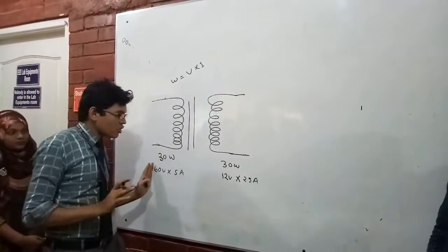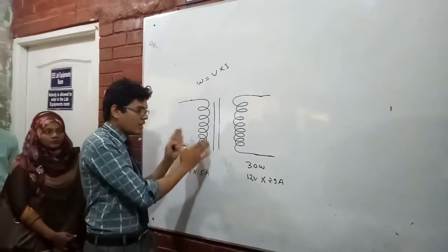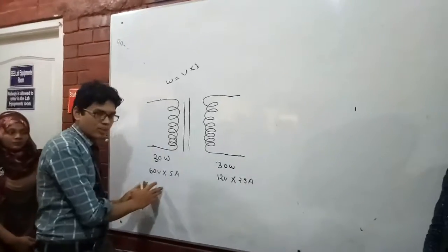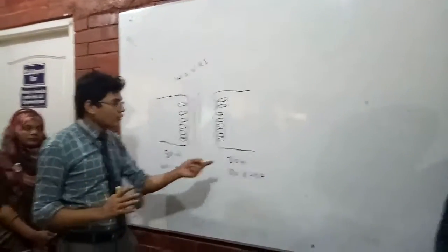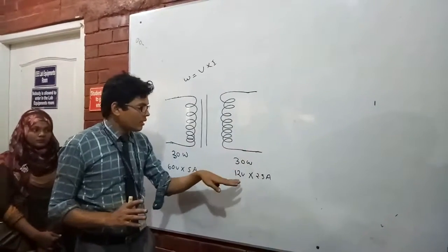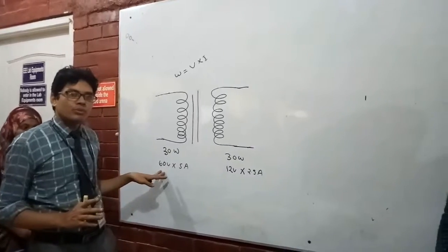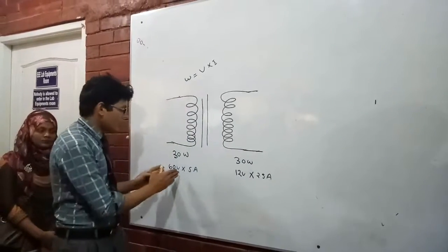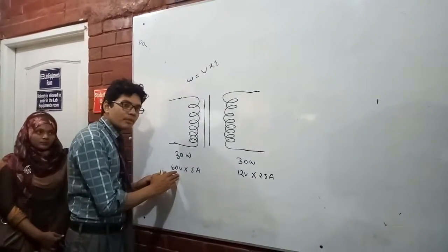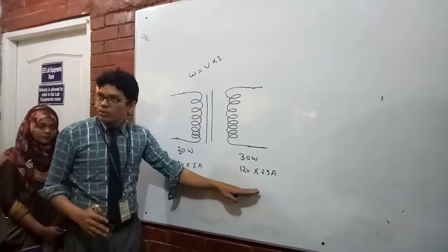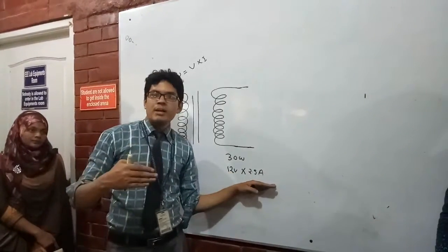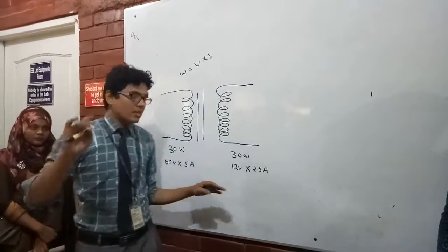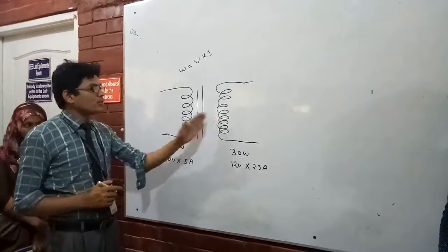A transformer has two types: step-up and step-down. If we step the voltage down to a lower voltage it is called a step-down transformer. If we take a low voltage and step it up to a higher voltage, that is called a step-up transformer. It all depends on the turns ratio between the primary and secondary winding.